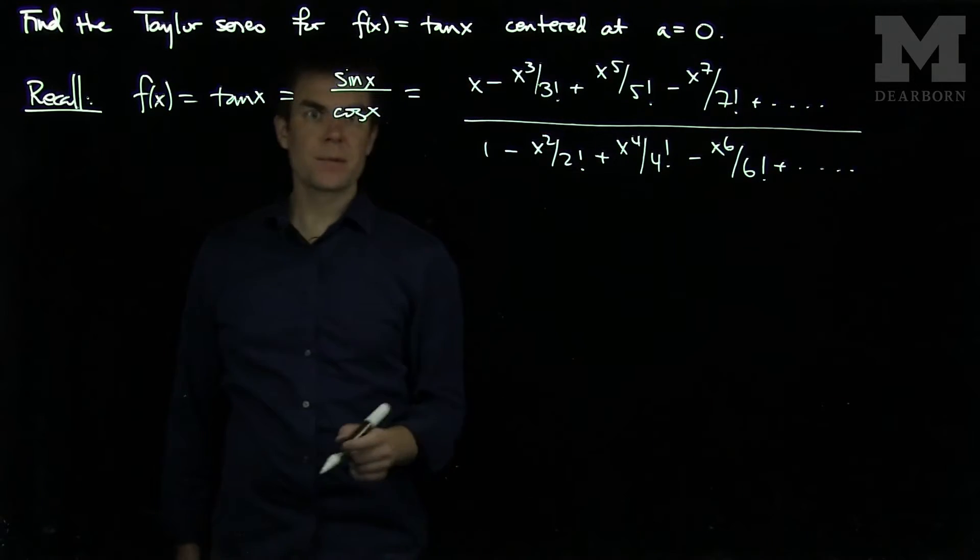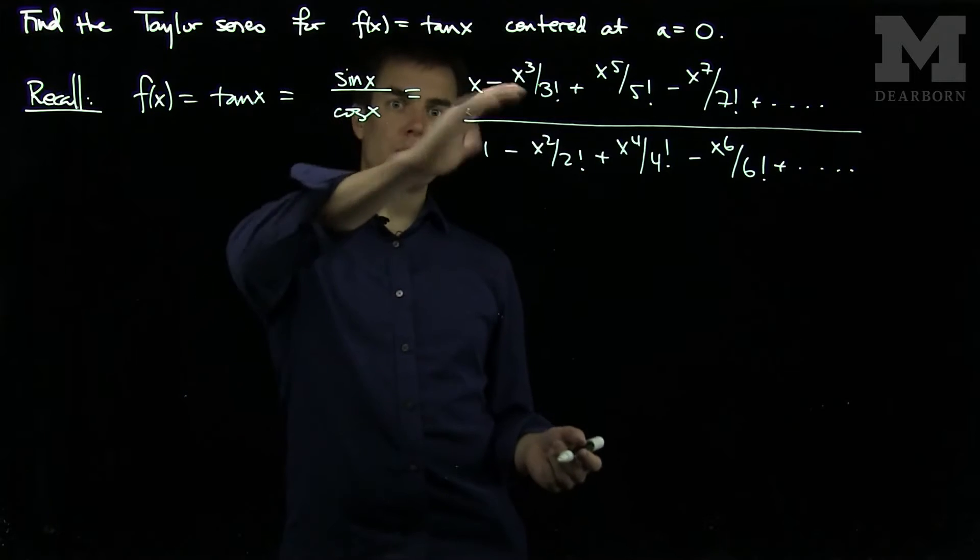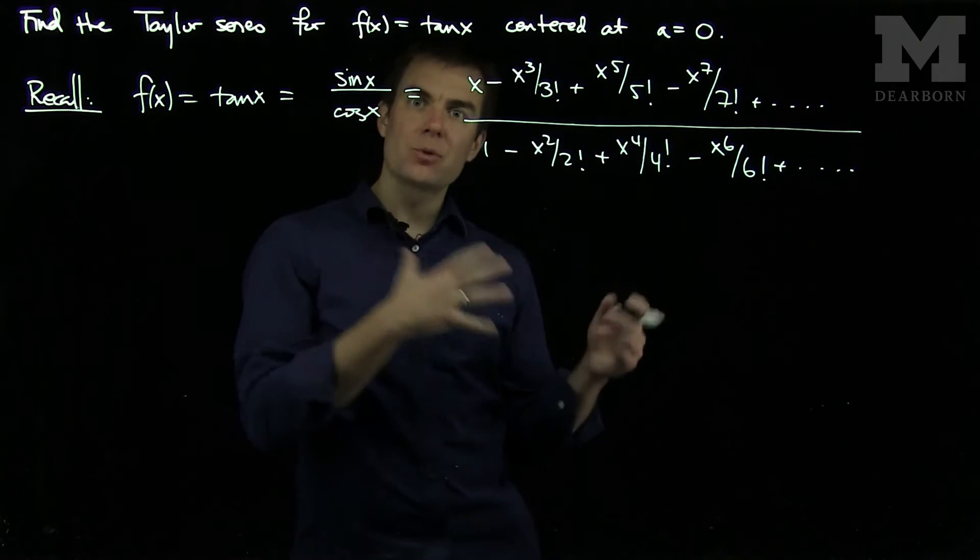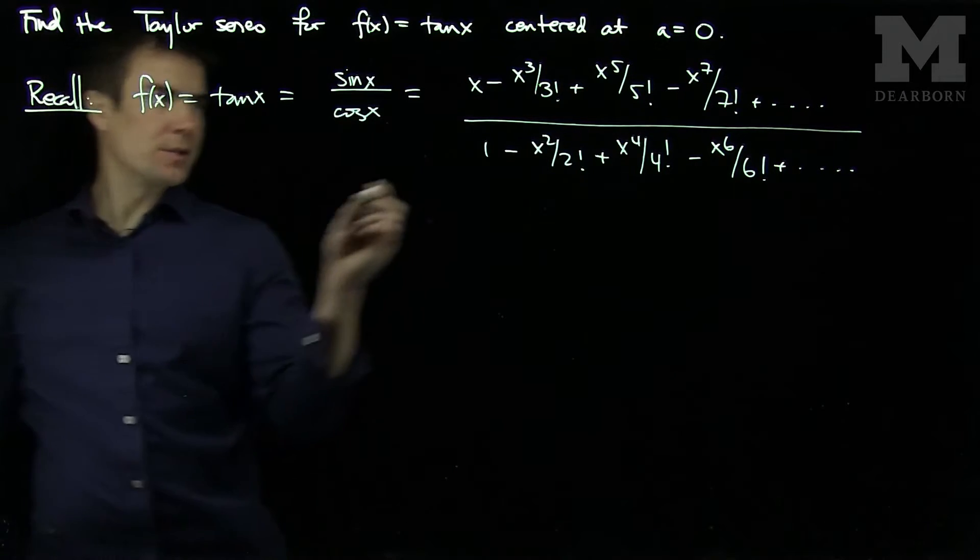And so what we'll do is we basically have two infinite polynomials. We'll actually divide them and keep track of the coefficients. So to do the division, let's write this out.